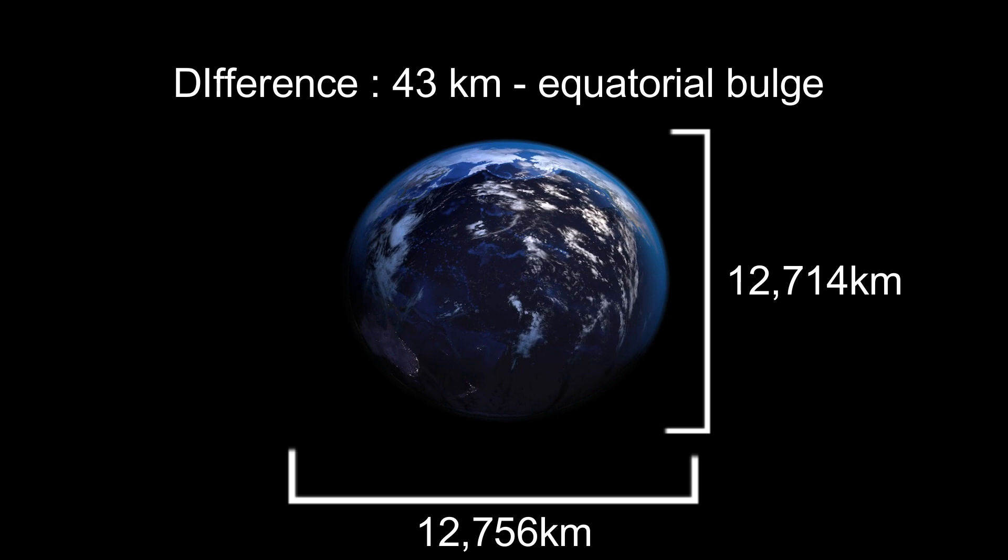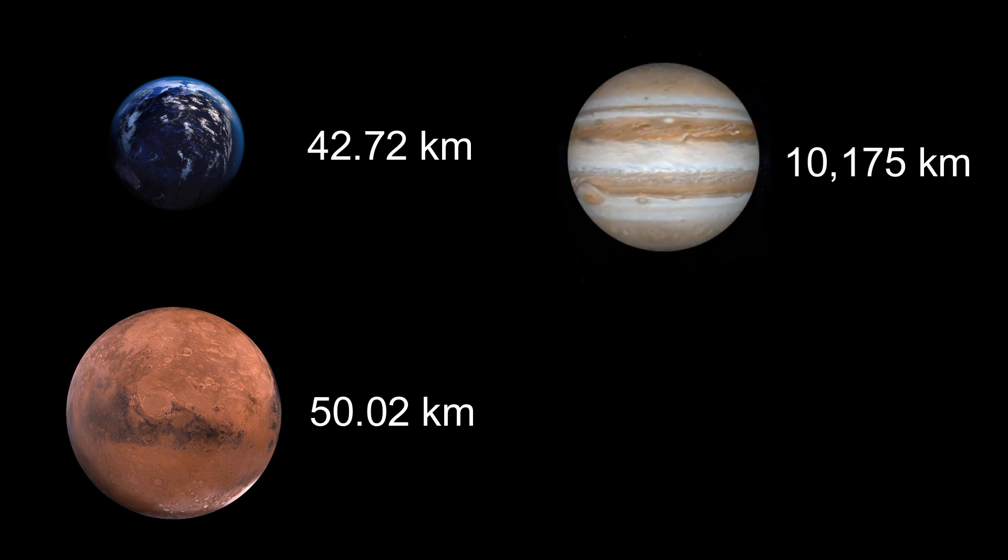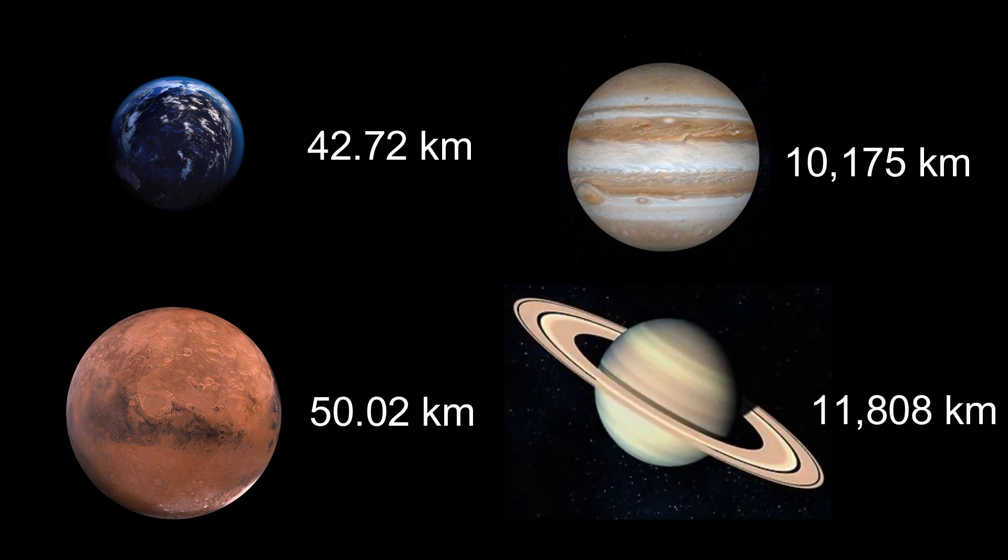Earth isn't the only planet in our solar system to have an equatorial bulge. Mars has an equatorial bulge of 50.2 km. Jupiter is 10,175 km. And Saturn has 11,808 km.